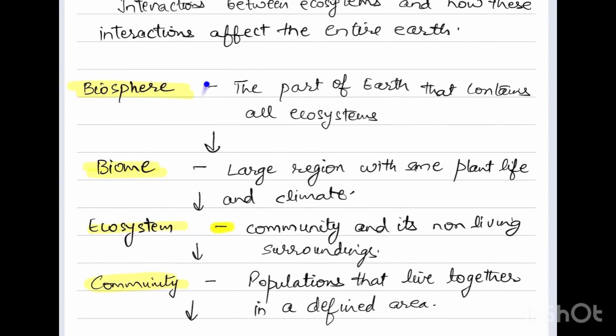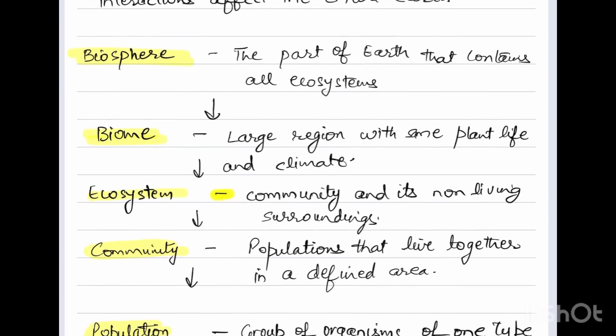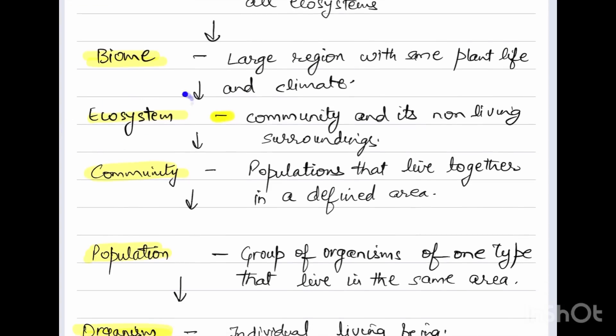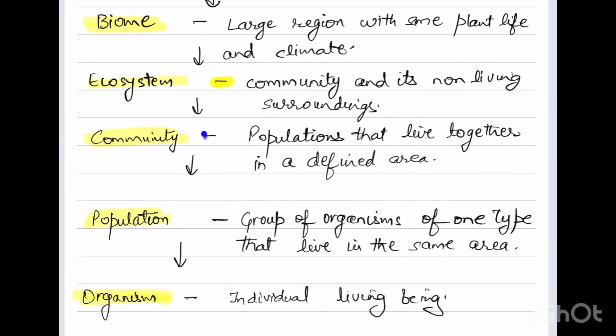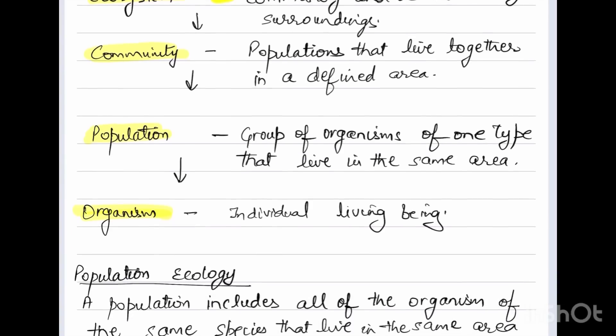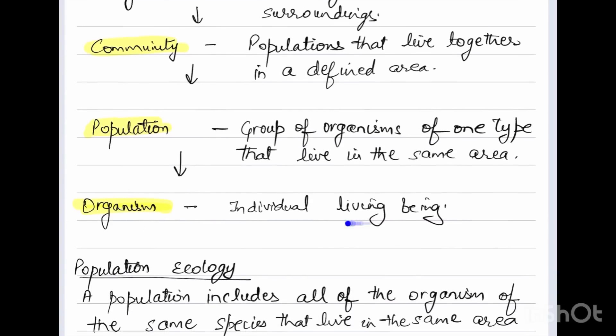Let's see the hierarchy starting from the large surface: biosphere, the part of the Earth that contains all ecosystems; then comes biomes, large regions with the same plant life and climate; ecosystem, the community and its non-living surroundings; next we have community, populations that live together in a defined area; followed by population, groups of organisms of one type that live in the same area; and finally organism, individual living beings.